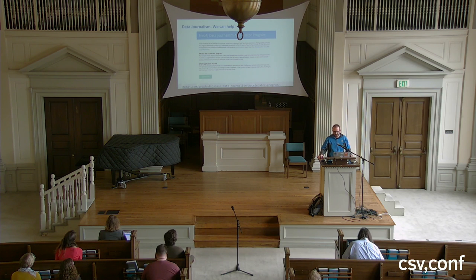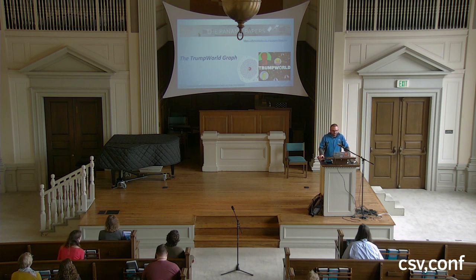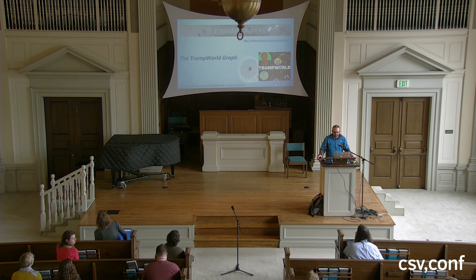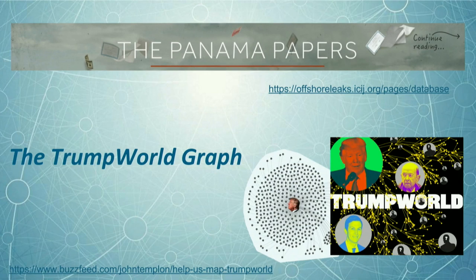What I'm going to talk about today are a couple of data sets related to data journalism that folks are using Neo4j with — specifically the Trump World one. These are the two data sets we're going to talk about: the Panama Papers, which we'll mention briefly, and then we'll dive into what we're calling the Trump World graph.